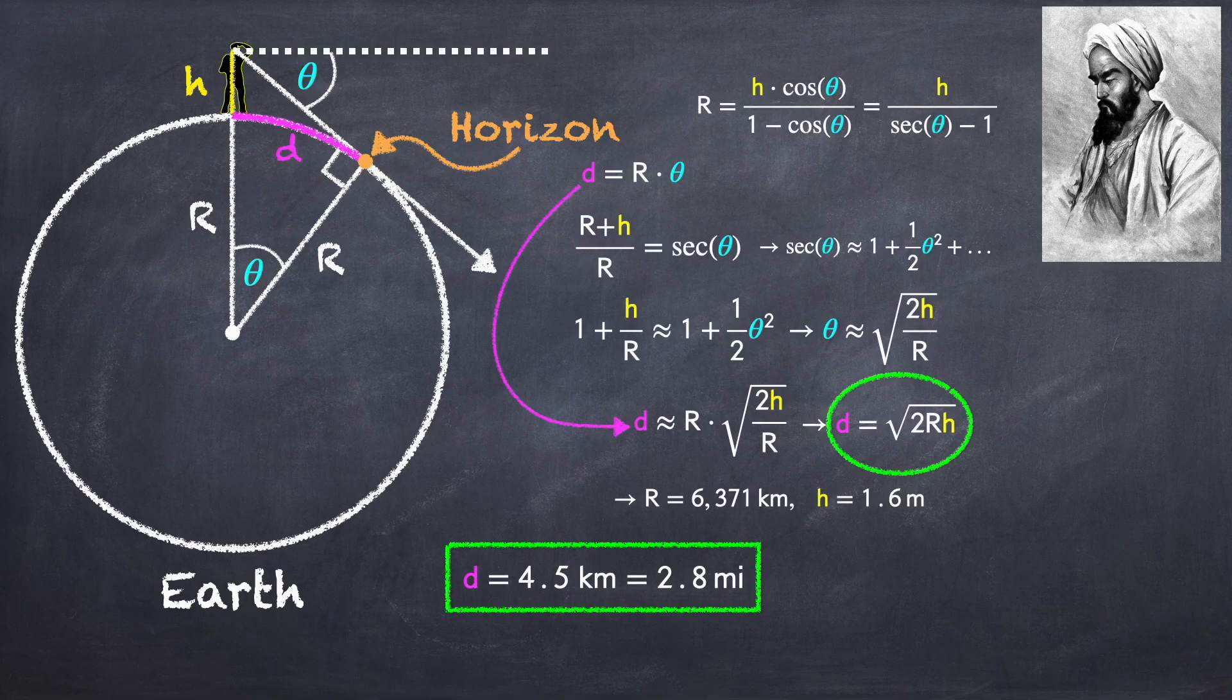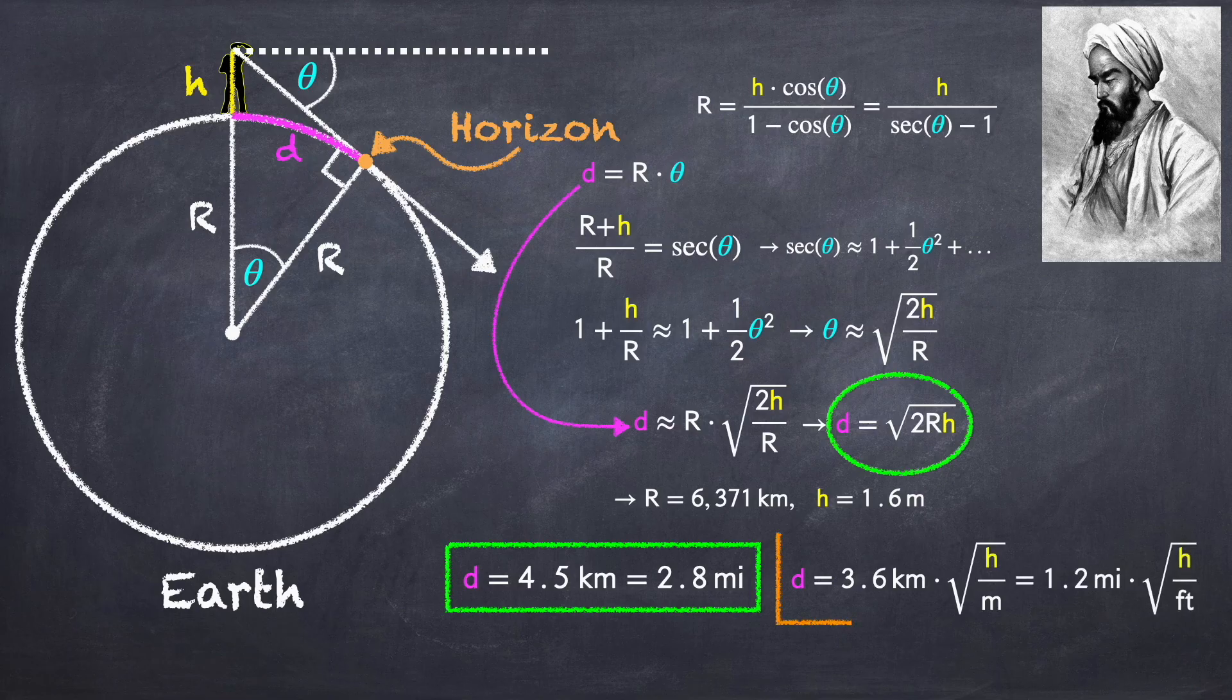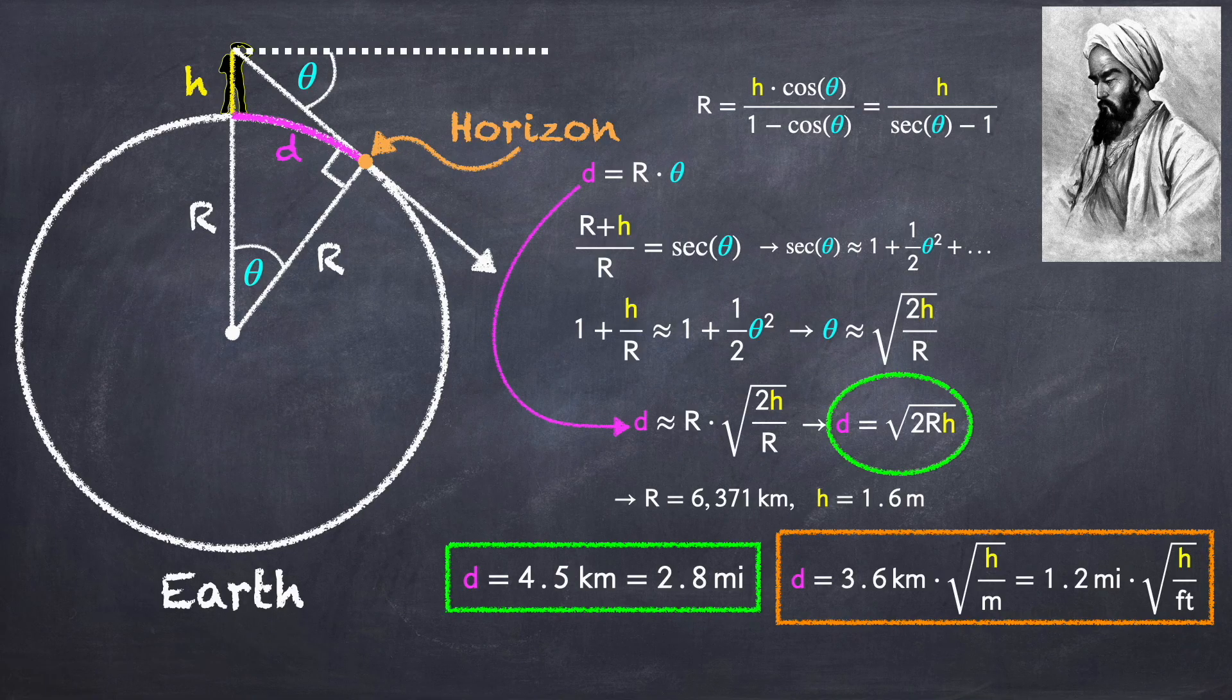But we can also find the distance to the horizon for some general height h above the horizon. In that case we get that the distance to the horizon is about 3.6 kilometers times the square root of h if h is measured in meters, or 1.2 miles times the square root of h if h is measured in feet.